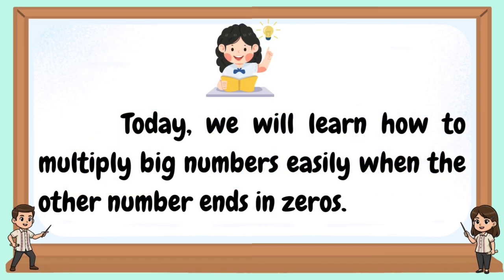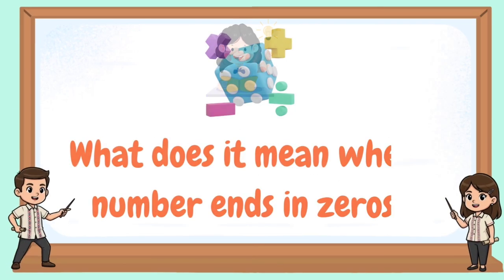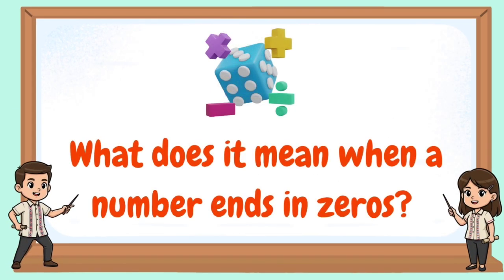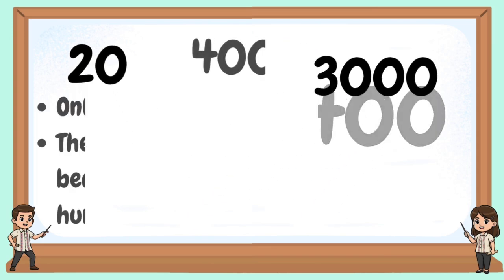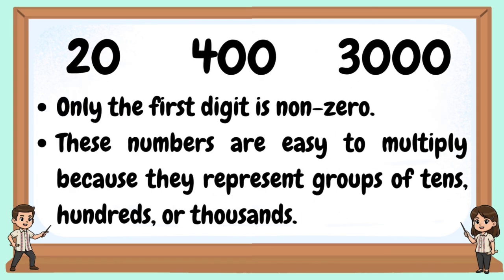Today, we will learn how to multiply big numbers easily when the other number ends in zeros. Examples: 20, 400, and 3,000. Only the first digit is non-zero. These numbers are easy to multiply because they represent groups of tens, hundreds, or thousands.